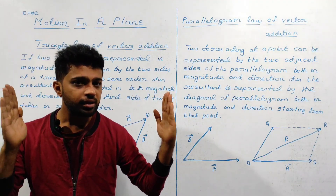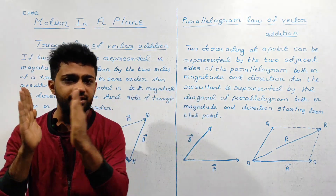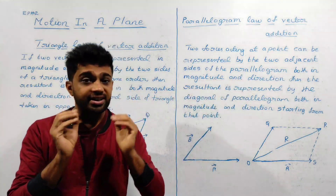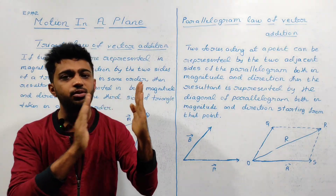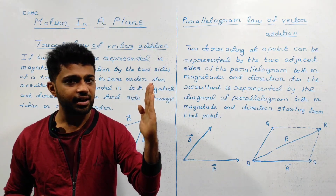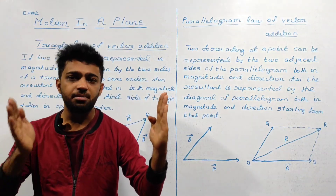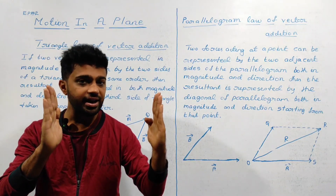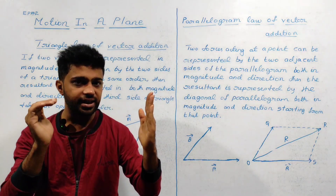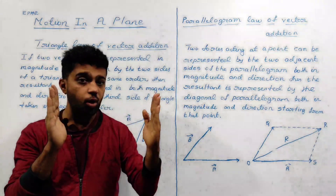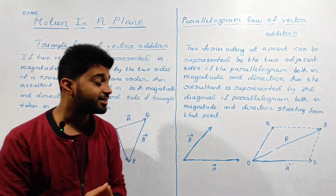What we are going to do is take the vectors in the same order. Here is the example — the vectors are placed with their heads and tails in the same order. If we take the opposite order or reverse order, the vectors go in the reverse direction.